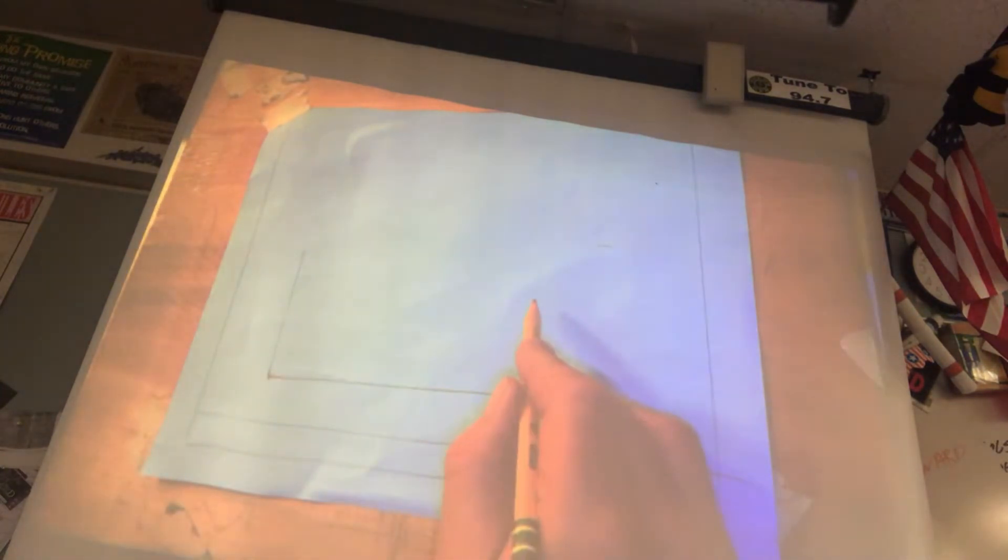We will get into centering the object on the paper later on, because that's a whole process in itself, where technically you're supposed to find the middle of the work area, come down half the width, half the depth, half the height, but we'll get into that later.